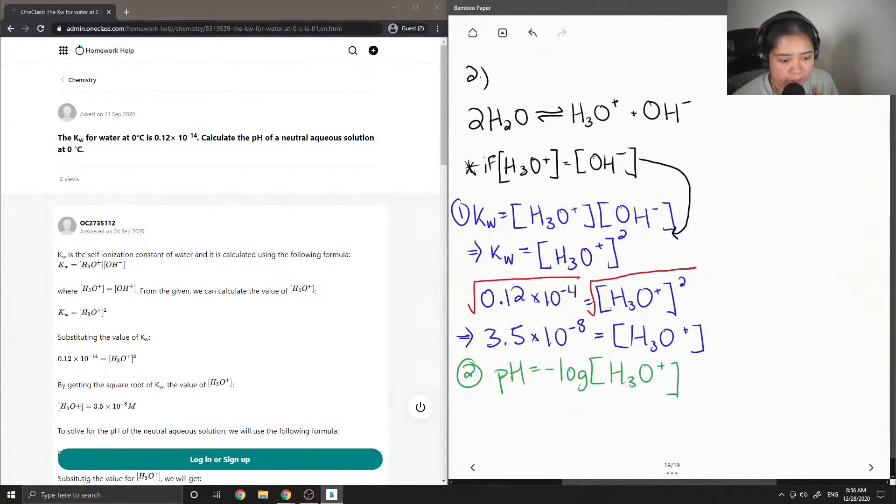So since we already found this in the previous step all we need to do is plug it in, so negative log of 3.5 times 10 to the negative 8, which gives us pH value of 7.46.